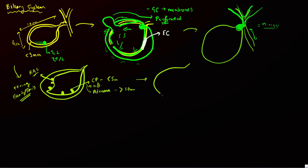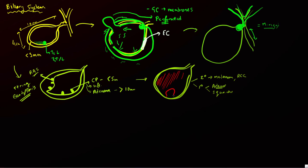Primary gallbladder neoplasms are predominantly adenocarcinoma — about 95% of cases. Squamous cell cancers and lymphomas are occasionally reported. Metastatic disease, most commonly from melanoma and RCC, is much less common. Adenocarcinomas can appear as infiltrating masses replacing the entire gallbladder or as polypoid masses. They tend to invade the adjacent liver surface and have a propensity to cause carcinomatosis.